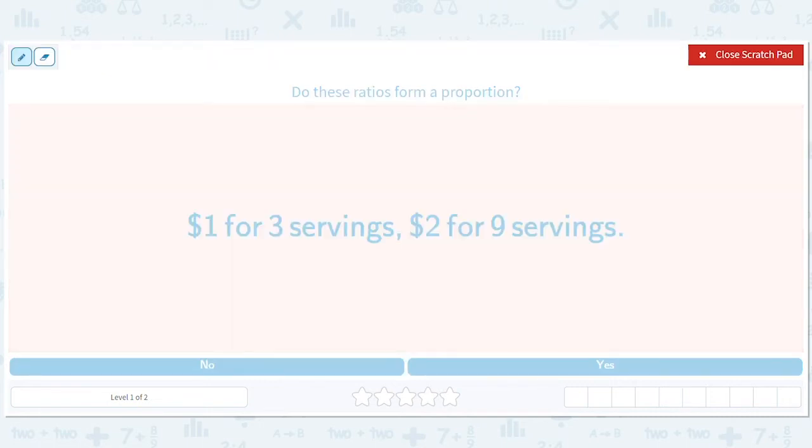Well, there are a couple ways we can reason this out. So one for three, that would be two dollars for six servings and three dollars for nine servings. So not two dollars for nine servings. So that's one way of seeing it. The answer is no.